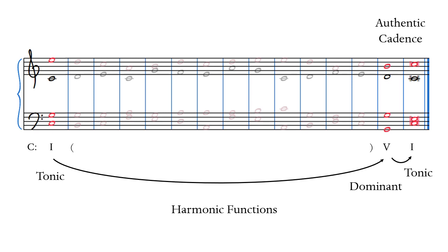The tonic function provides stability for the beginning and the end, and the dominant function confirms the tonic and brings about harmonic and melodic closure at the authentic cadence. The topic of this video is the dominant seventh chord, which is a special kind of dissonance that arose out of the authentic cadence, used to indicate the closure of a phrase, or of a section of music, or of an entire composition. To understand this kind of dissonance, we need to look more closely at the voice leading of the authentic cadence.